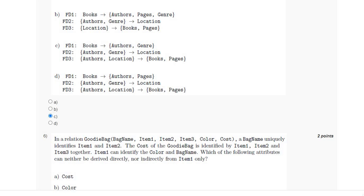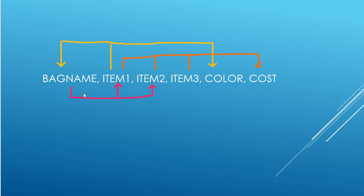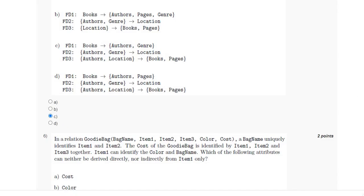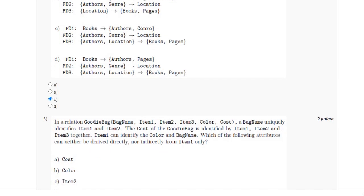For the sixth question, we have been given the relation goodie bag and we have to find those attributes which can neither be derived directly nor indirectly from item1 only. The baggage is capable of finding item1 and item2, and item1, item2, and item3 together find the cost. Item1 finds bag name and color. Since item1 derives bag name, and bag name is capable of finding item2, we need the attributes which cannot be derived from item1. So for this the answer is option A and D.